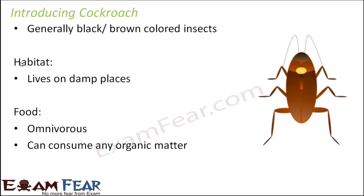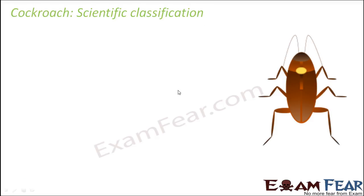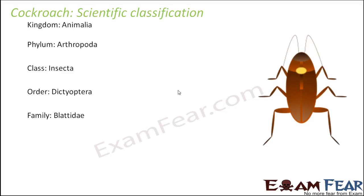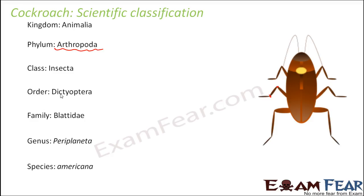Let us look at the scientific classification of cockroach. It belongs to kingdom Animalia, phylum Arthropoda — arthropods are animals with jointed legs. Class is Insecta, order Dictyoptera, family Blatidae, genus Periplaneta, and species americana. So Periplaneta americana is the most commonly found cockroach, and this becomes its scientific name.